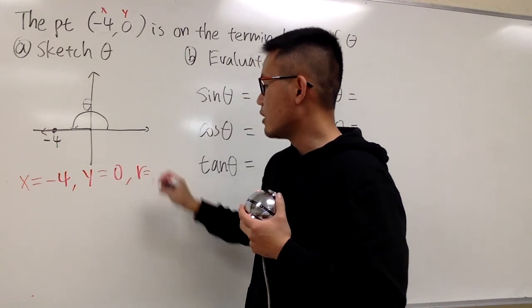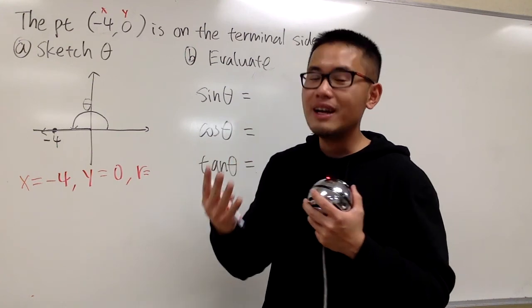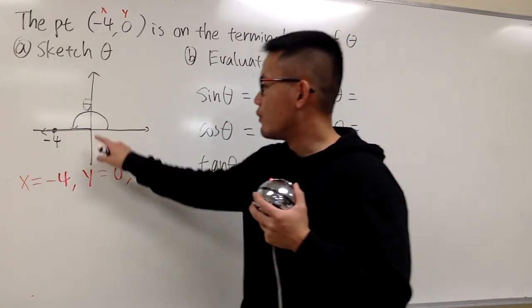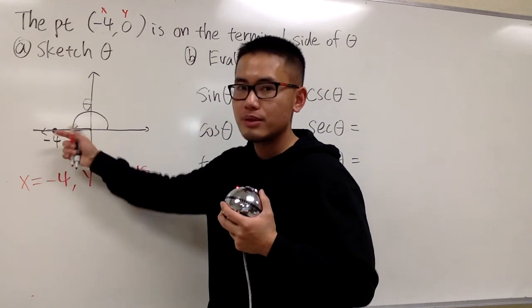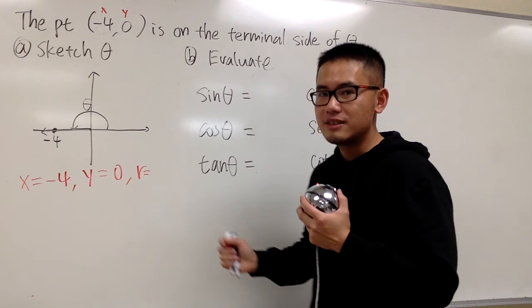And we also need to come with the r. r is positive 4. r is always going to be the positive distance from the origin to this point, based on this situation. So it is positive 4, just the positive distance.